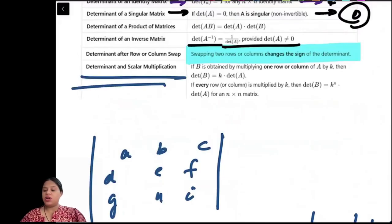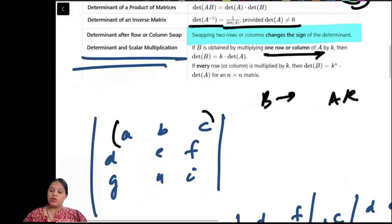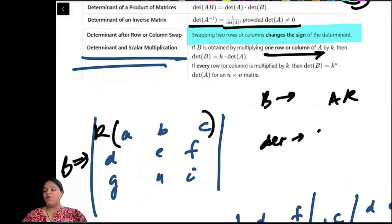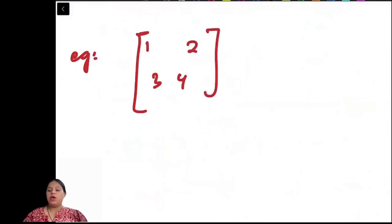For determinant and scalar multiplication, suppose B is obtained by multiplying one row or column of A by K. If we multiply a column by K and create a new matrix B, the determinant will be K times determinant of A. For example, if we have a matrix 1, 2, 3, 4, and we multiply the first row by 2 and the second row by 3, the determinant becomes 4 minus 6, which is minus 2.